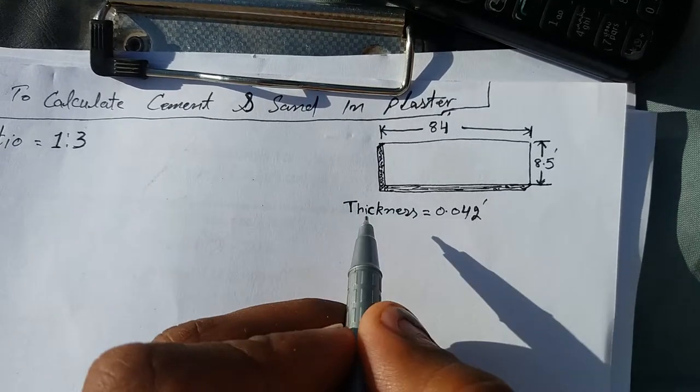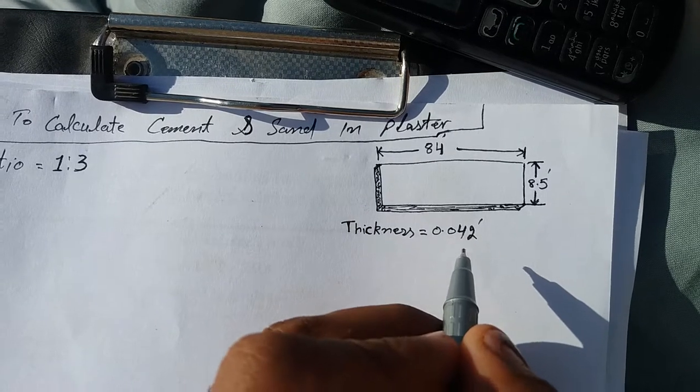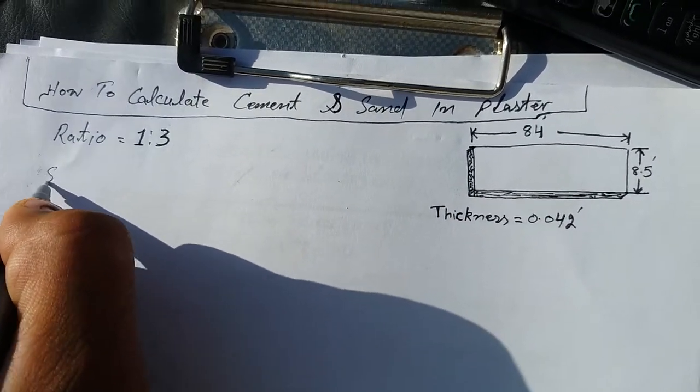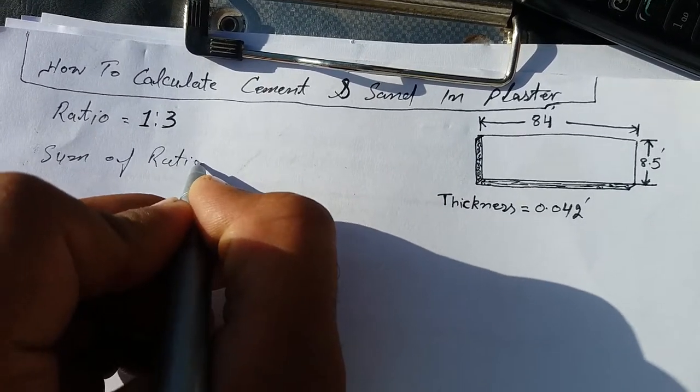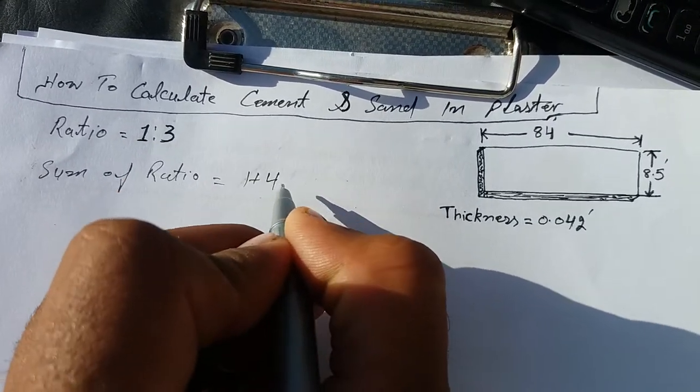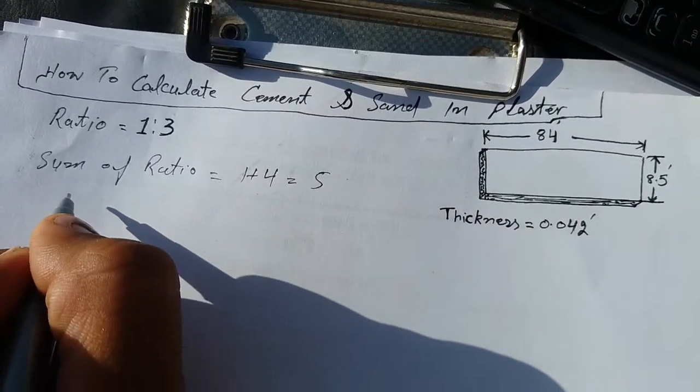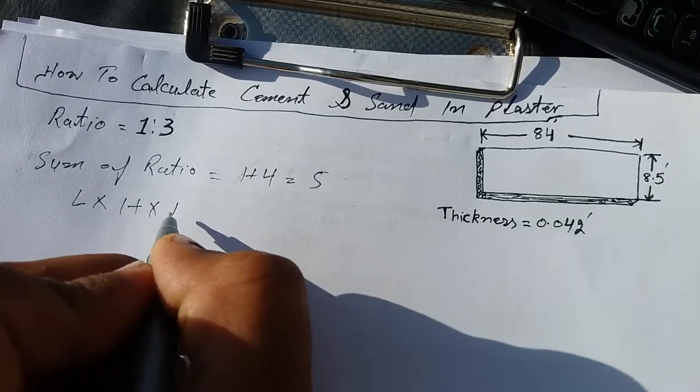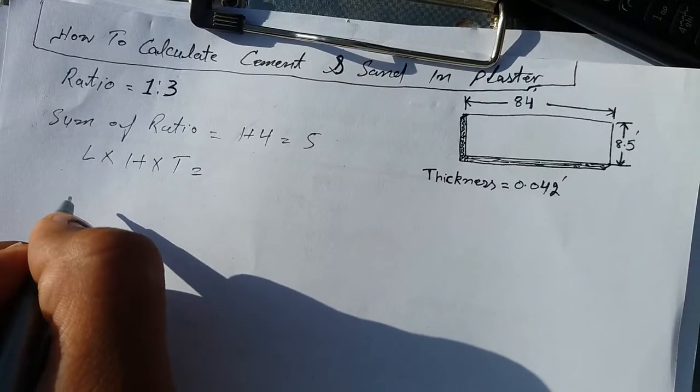The plaster thickness is 0.042 feet. The sum of ratio is 1 plus 3 equals 5. We have the formula: length times height times thickness. So we have a length is 84 feet times 8.5 feet times thickness 0.042.